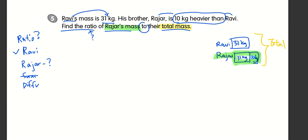So given this, I can find Raja. In this model, Raja will be 31 kilograms plus the 10 kilograms that's heavier. That gives you 41 kilograms. So you want to find the total. Total will be Ravi plus Raja, and that gives you 72 kilograms.